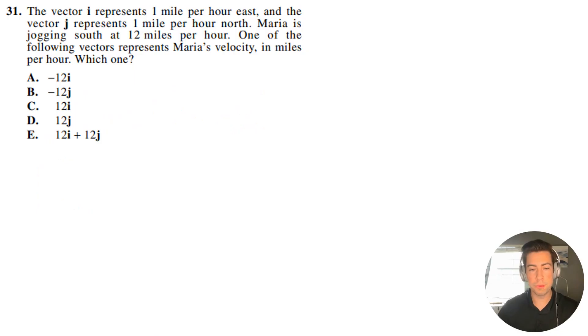All right, question number 31. Let's get right into it. We have the vector I represents one mile per hour east and the vector J represents one mile per hour north. Maria is jogging south at 12 miles per hour. One of the following vectors represents Maria's velocity in miles per hour. Which one?